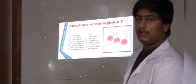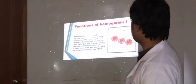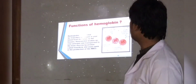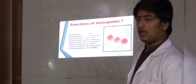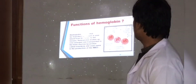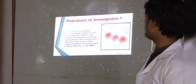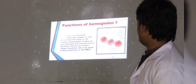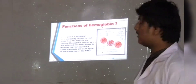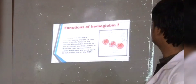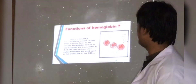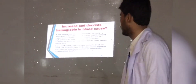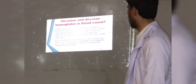Hemoglobin is essential for transferring oxygen in your blood from the lungs to the tissues. Hemoglobin is broken down to iron and transferred to the bone marrow by a protein called transferrin, and used again in the production of red blood cells.